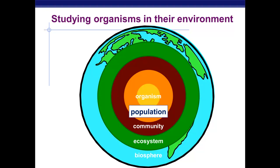Now, we take a community and we look not only at the living things, but also the non-living things — the abiotic things like water and temperature. Then we get an ecosystem. So an ecosystem is a combination of the living and non-living things in an area.